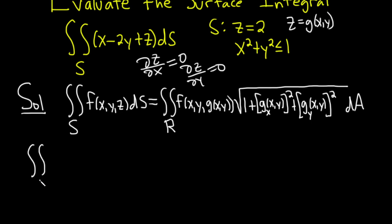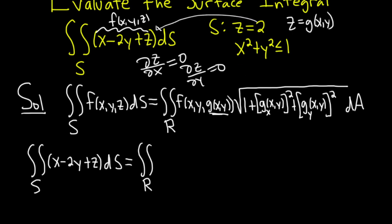All right, I'm going to go ahead and write down our original problem. So we have the surface integral over s of x minus 2y plus z ds. That's equal to, and then we have this double integral over the region R. This here is your f of x, y, z. So basically, this is just saying plug in g for your z, but that's 2. So we're basically just going to put a 2 here where the z is. It'll be x minus 2y plus 2. And then all of this is 0, so we just get the square root of 1 dA.